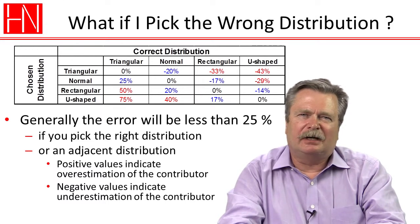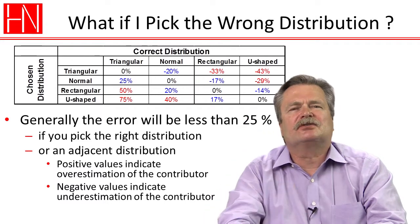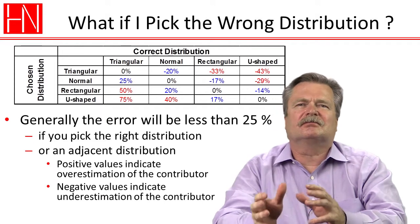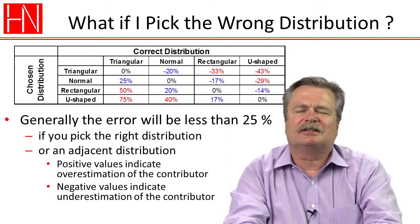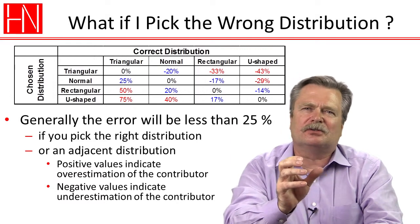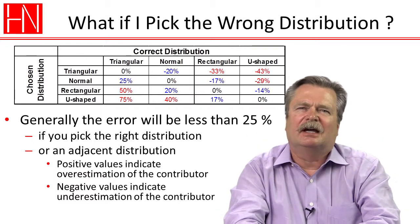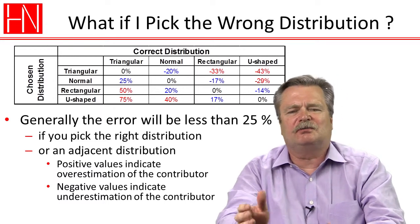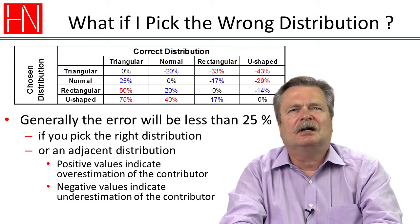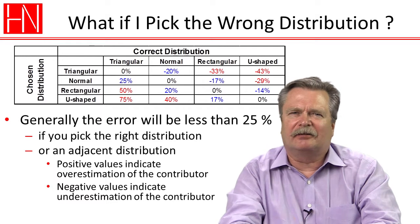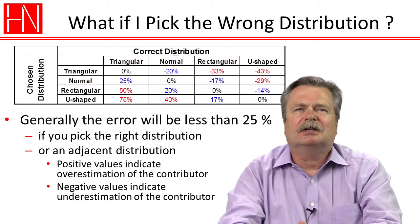I've rated the distributions from most optimistic to least. The triangular distribution is the most optimistic — its factor is zero point four times the variation limit, which is the lowest factor there is. On the other extreme, there's the U-shape distribution, where the factor is zero point seven times the variation limit, which is the highest. For the normal distribution, I've used zero point five.